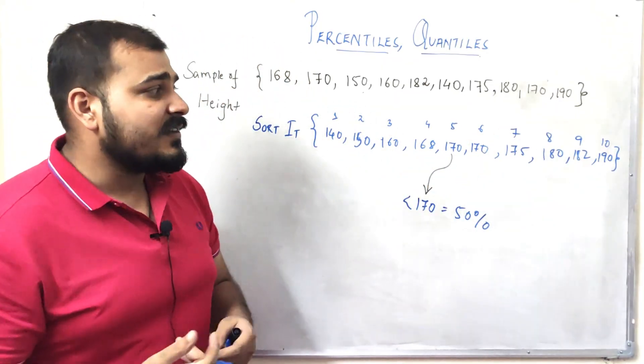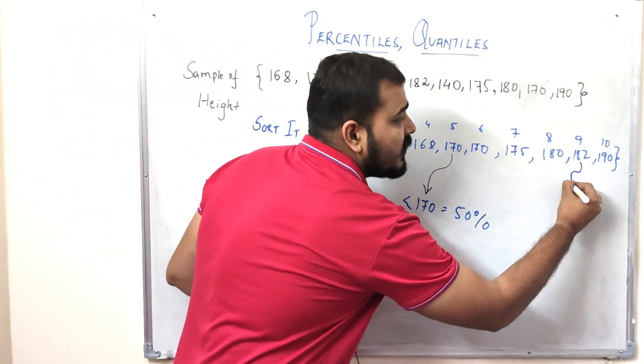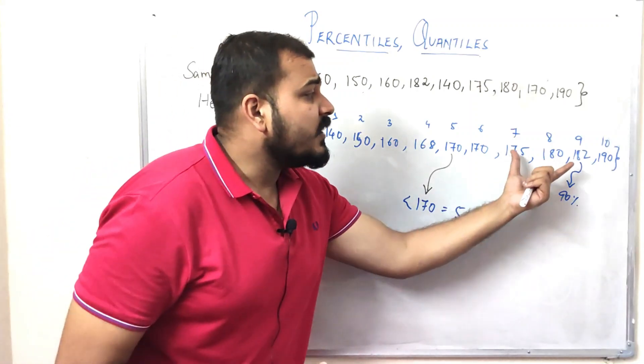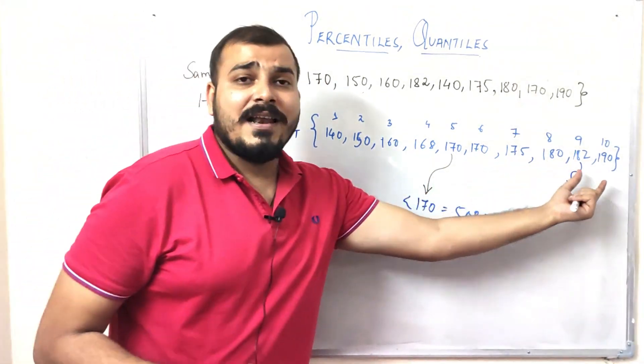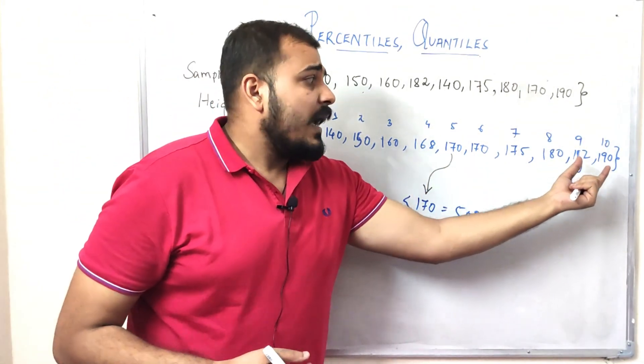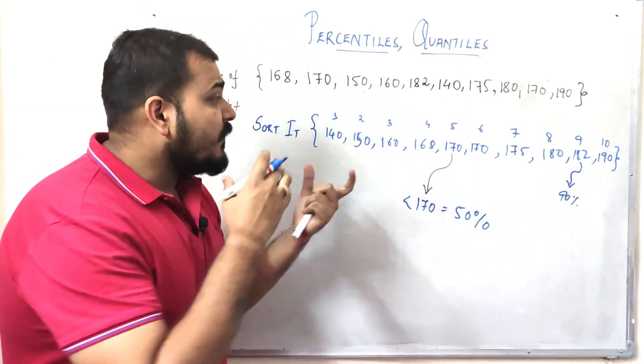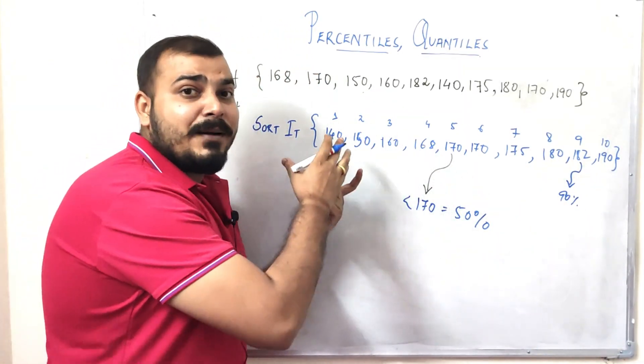Now suppose if I want to calculate the 90th percentile. This is basically my 90th percentile. This indicates that 90 percent of values are less than 182 value, and 10 percent are basically greater than 182 score.